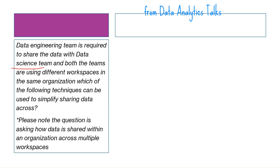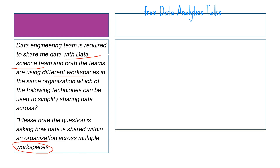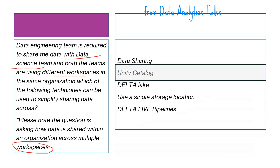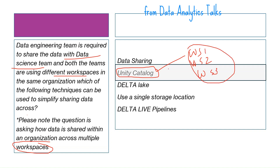Scenario twelve: a data engineering team needs to share data with a data science team, but both teams are using different workspaces within the same organization. Which technique can be used to simplify sharing data across workspaces? The options include data sharing, data catalog, Delta Lake, a single storage location, and Delta Live pipelines. The correct answer is Unity Catalog, which has built-in data sharing features that work across multiple workspaces.